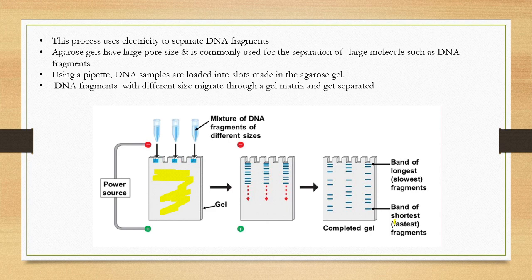The smallest fragments move fastest. Bands of shortest fragments are separated at the far end. This is the way by which the fragments are separated based on their charge and size.